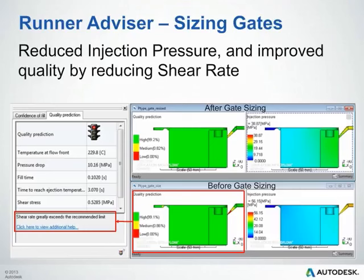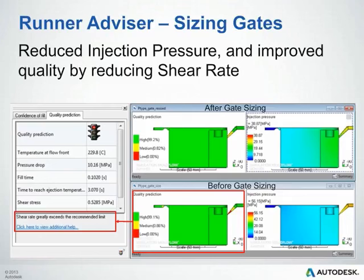Here's a good example of the runner advisor resizing our gates to reduce injection pressures and help improve quality by reducing shear rates. In the UI section, using the results advisor and querying that gate, you can clearly see there's a red stoplight advising that the shear rates greatly exceed the recommended limits. After running the runner advisor analysis, you can see the quality is greatly increased. The runner advisor analysis not only strives to reduce runner volume, but it can also increase the sizes of your gates in order to help with shear issues.